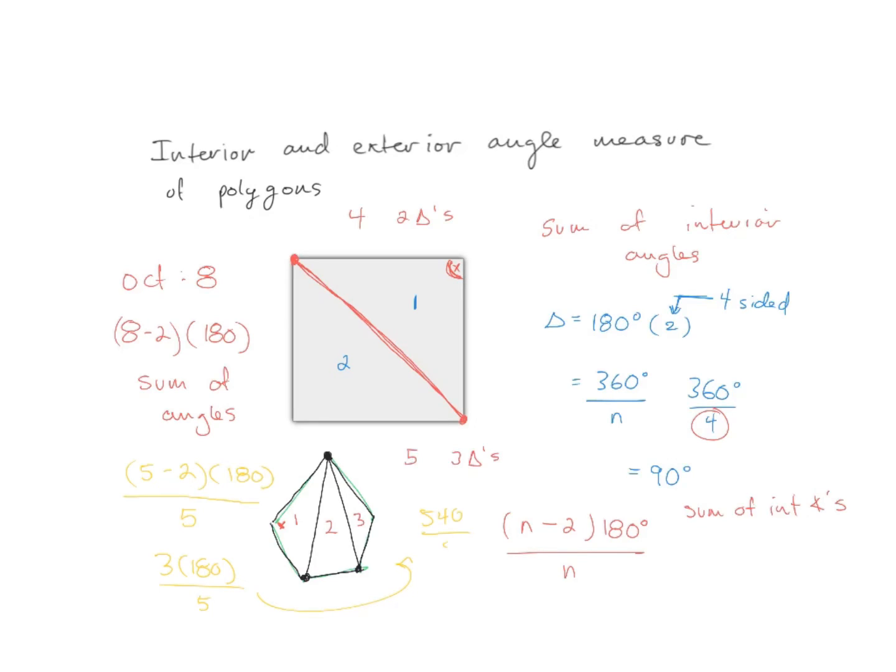A common mistake students make is because they get a three here, all of a sudden they'll change this number to a three and they'll start dividing by three. Make sure you continue to use the same sides that you were working with.